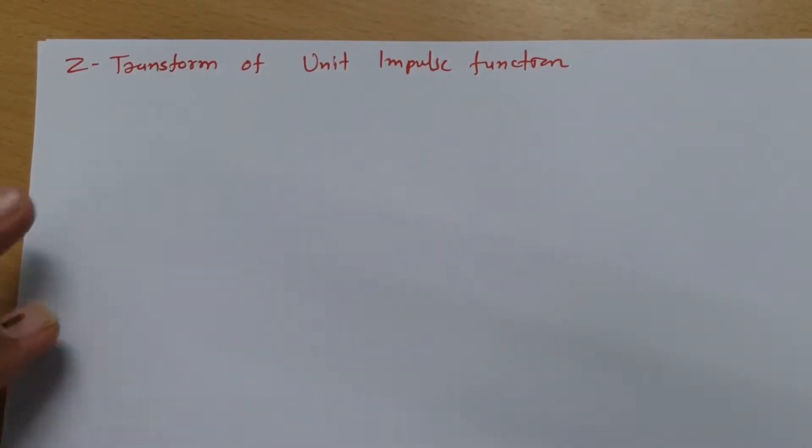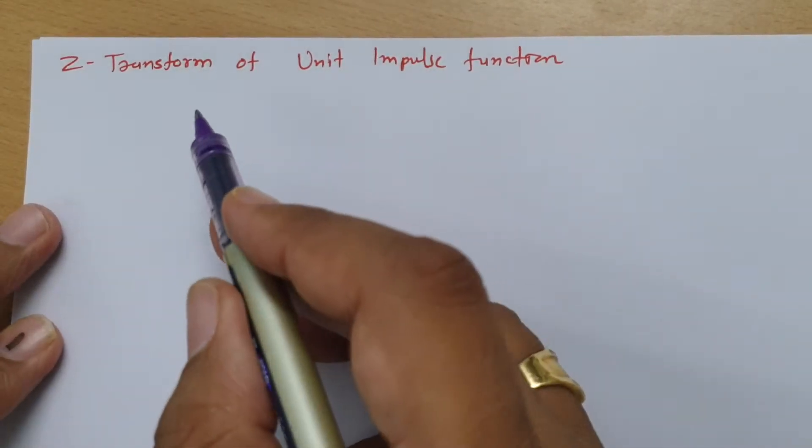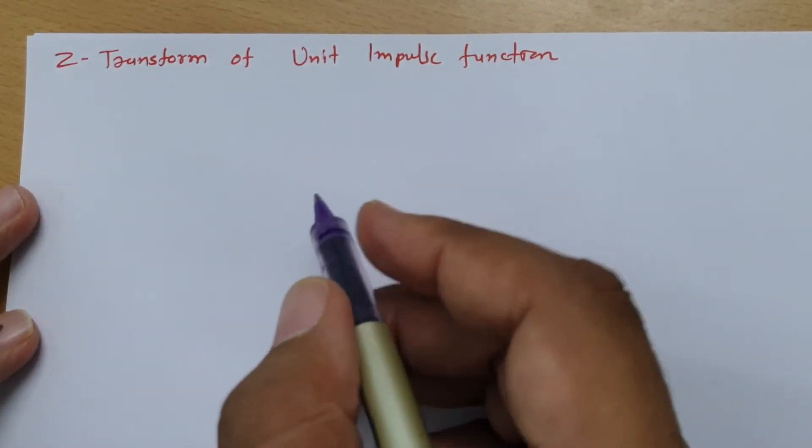Welcome to signal and system lecture series. Here in this session, I will explain the Z-transform of the unit impulse function.